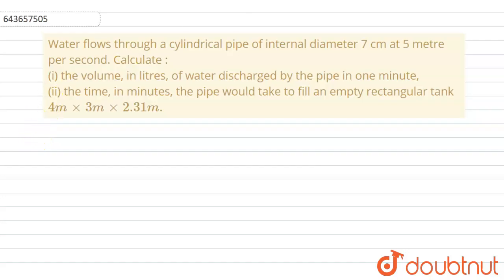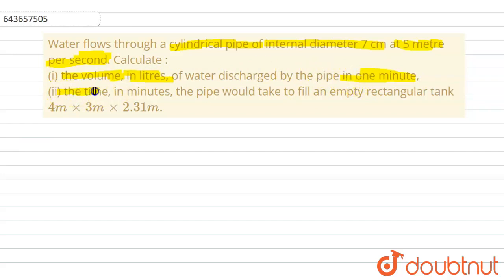Hello, in this question we are given with a statement that water flows through a cylindrical pipe having an internal diameter of 7 centimeters at 5 meters per second. In the first part, we have to calculate the volume in liters of water discharged by the pipe in 1 minute, and in the second part we have to calculate the time the pipe will take to completely fill an empty rectangular tank, which is basically a cuboid because it has length, breadth and height.